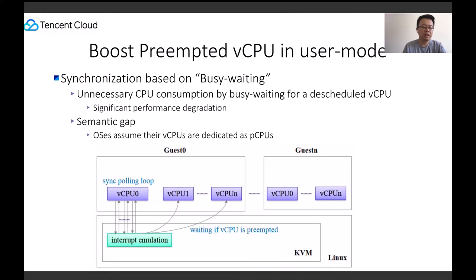In this scenario, the initiator vCPU would end up busy waiting for a long amount of time, also consuming CPU unnecessarily to wake up the target of the shutdown. There is a semantic gap here — the OS makes liberal use of busy waiting since it believes its vCPUs are dedicated.